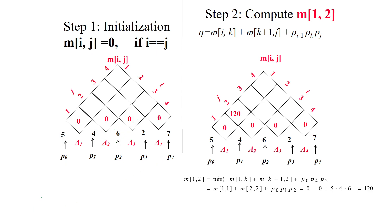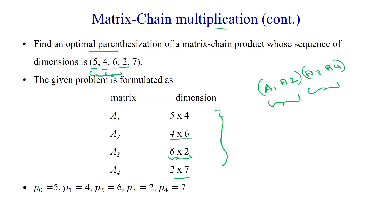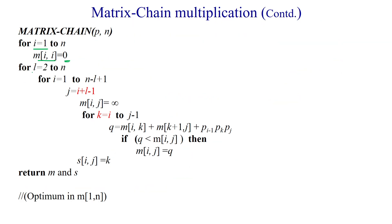The second step in the algorithm is: l goes from 2 to n. Here n=4 (4 number of matrices). Then i goes from 1 to n−l+1, which is 4−2+1=3. So i ranges from 1 to 3.